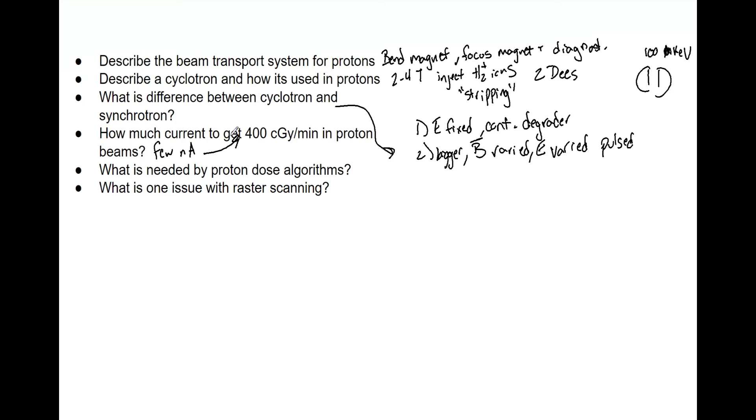What is needed by proton dose algorithms? First thing you need is HU versus the electron density. Then you need the HU versus the relative stopping power. Ultimately what this is is the rate at which the charged particles lose their energy within that particular material, which is why you need the electron density and the relative stopping power.